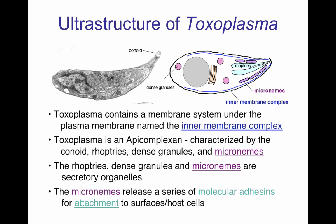Toxoplasma is an apicomplexan, meaning it is a cell that has a conoid at the end. It contains multiple membranes: a plasma membrane and an inner membrane complex, shown here by the blue line. It also contains organelles that make an apicomplexan: the conoids, the rhoptries, and the dense granules shown here in pink. The last structures to note are the micronemes — small organelles placed in the conical area of the parasite. The rhoptries, dense granules, and micronemes are all secretory organelles essential for infection.